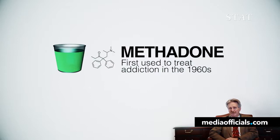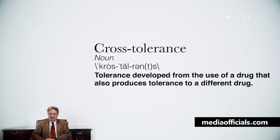The first drug that was used is a drug called methadone, it was developed in the mid-1960s. And that was used primarily to substitute for the heroin that individuals might be using. And because it's an opiate, it produces an effect called cross tolerance.